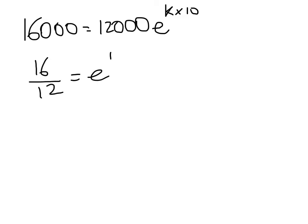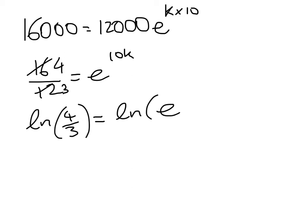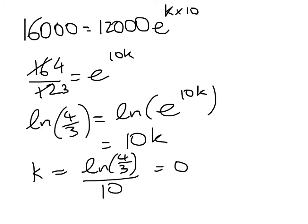So we have 16,000 equals 12,000 times E to the K times 10. So that gives me 16 over 12 equals E to the 10K. Take logs of both sides. First of all, let's simplify that. We get 4 thirds here. So the log of 4 thirds is equal to, doing this very slowly, the log of that. And this is just equal to 10K. So K is equal to the log of 4 thirds divided by 10, which works out to be 0.0288.